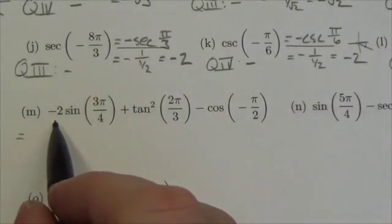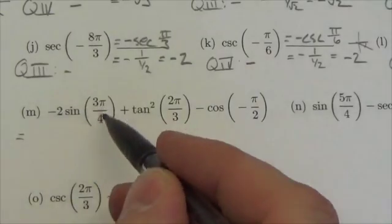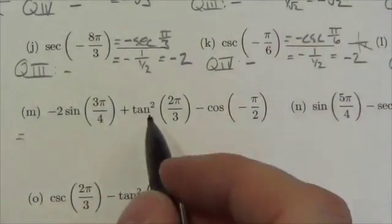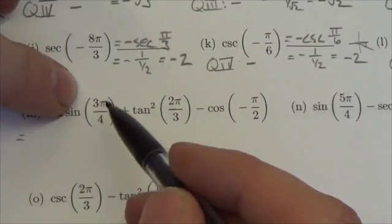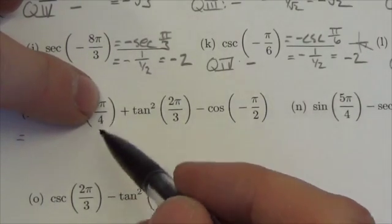First, negative 2 times sine of 3π/4. The reference angle for this is π/4. I can just cover up that coefficient of 3 and I'm left with π/4.